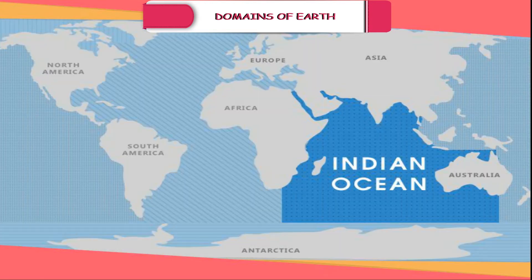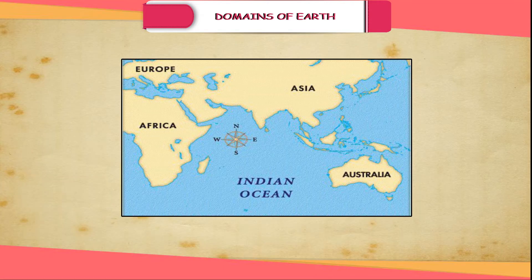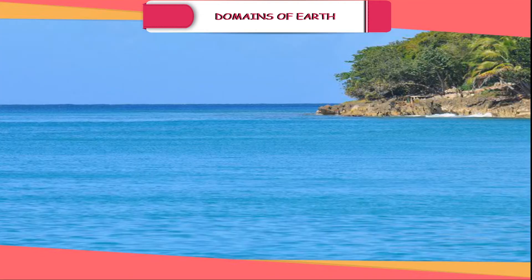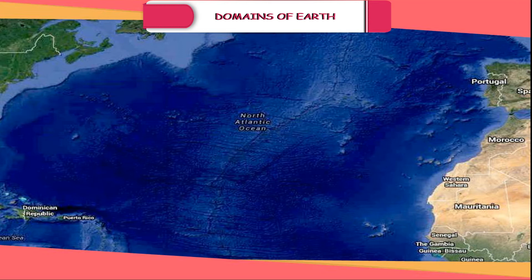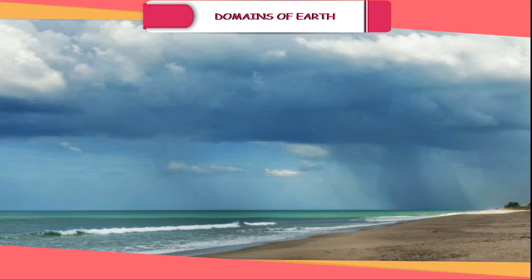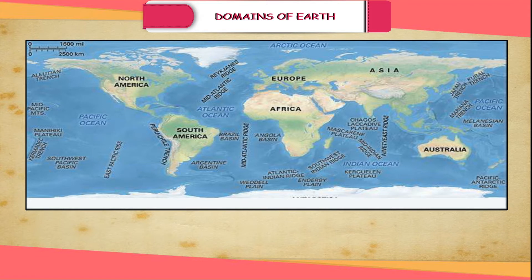Indian Ocean. It is the only ocean named after a country, that is India. The shape of the ocean is almost triangular. In the north it is bounded by Asia, in the west by Africa and in the east by Australia. Arctic Ocean. It surrounds the North Pole within the Arctic Circle. It is usually the northern extension of the Atlantic Ocean. It is connected with the Pacific Ocean by a narrow stretch of shallow water known as Bering Strait. It largely remains frozen with thick sheets of ice. It is bounded by northern coasts of North America and Eurasia. Southern Ocean. It surrounds the continent of Antarctica at the South Pole. It is also considered as an extension of the Pacific, the Atlantic and the Indian Oceans.